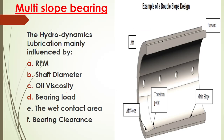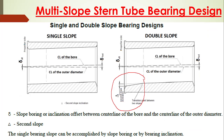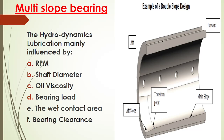Hydrodynamic lubrication is mainly influenced by RPM, shaft diameter, oil viscosity, bearing load, and wet contact area. There are two slopes: the main slope and the aft slope. The aft slope is provided specifically to reduce the edge contact of the propeller shaft and to prevent edge loading of the bearing.